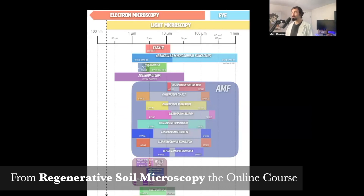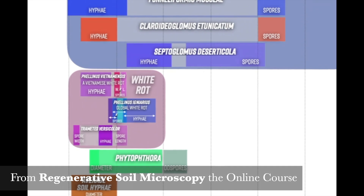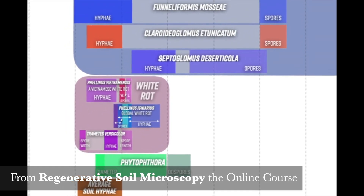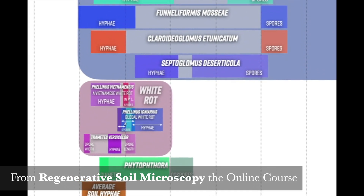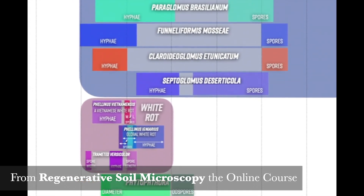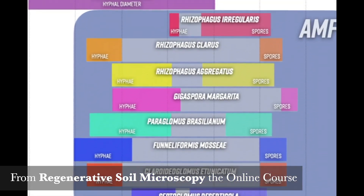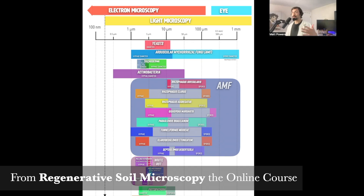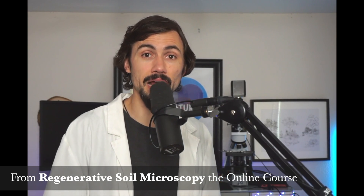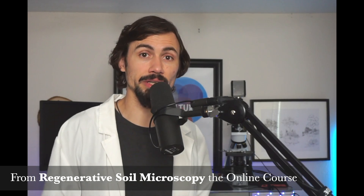When we break it down further, we see actinobacteria and arbuscular mycorrhizal fungi having a total overlap in size. And then you go down to the bottom and you see average soil hyphae — arbuscular mycorrhizal fungi, white rot, brown rot, trichoderma — there are all these things that overlap with that space. So you can have a lot of hyphae that looks the same size, but they could be from totally different parts of the fungal kingdom.